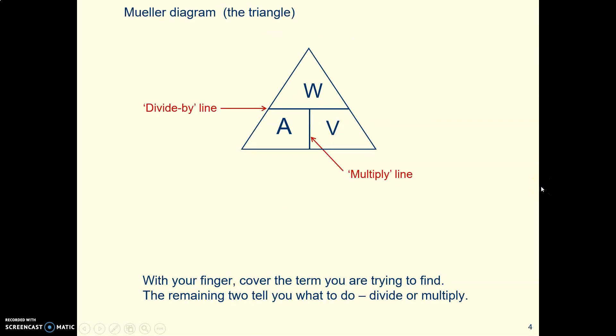And what you do to use this triangle, you cover up the thing you don't know, the thing you're trying to find, and whatever is left that's not covered up, that tells you what to do. Here's a line that's like a fraction line, this means divide, and the line here with the amps and the volts next to each other, that means multiply. I'm going to show you what I mean by that.